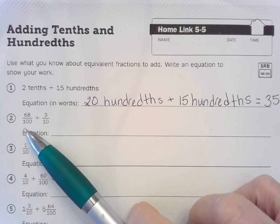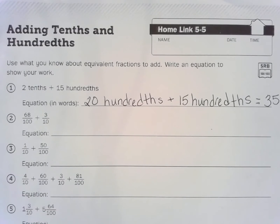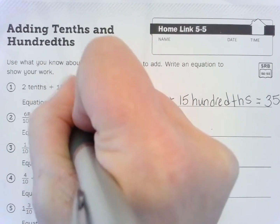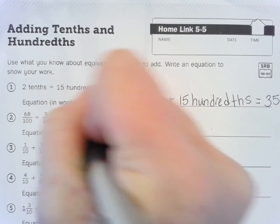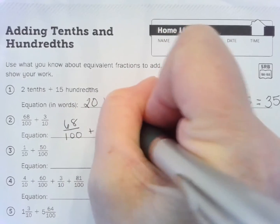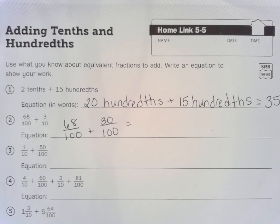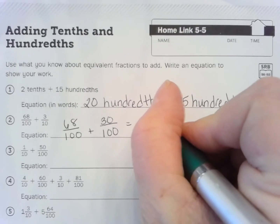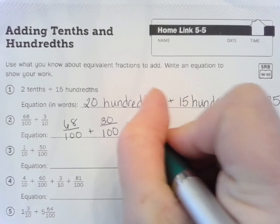So now 68 hundredths plus 3 tenths. Okay, so we can't add hundredths and tenths, and 68 is not base 10, so we have to instead multiply the 3 and the 10 by 10. So that's going to be 68 hundredths plus 30 hundredths, equals 68 plus 30. What does that equal? 68 plus 30 is 98 hundredths, right.